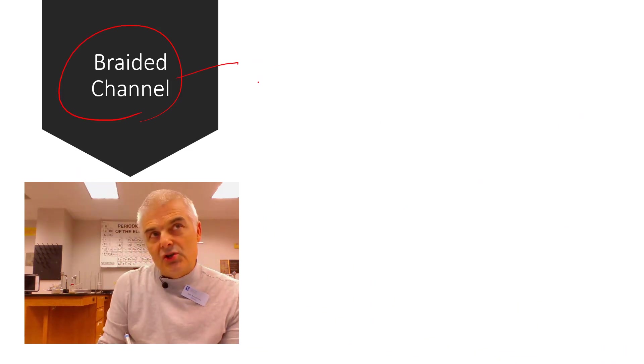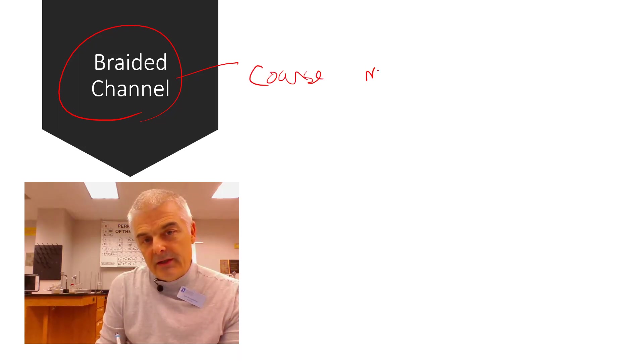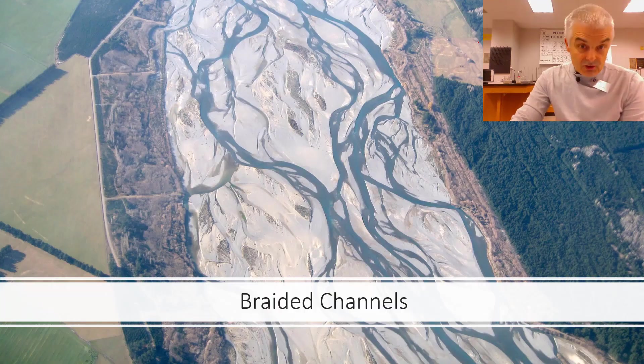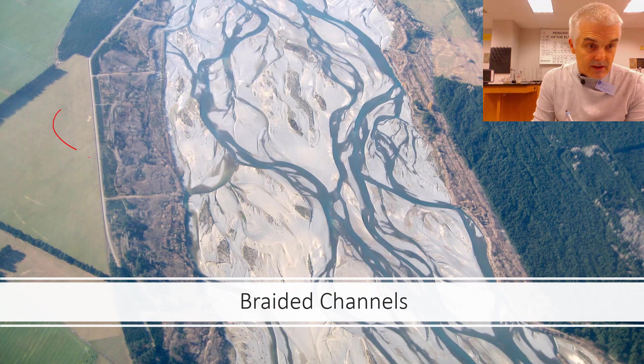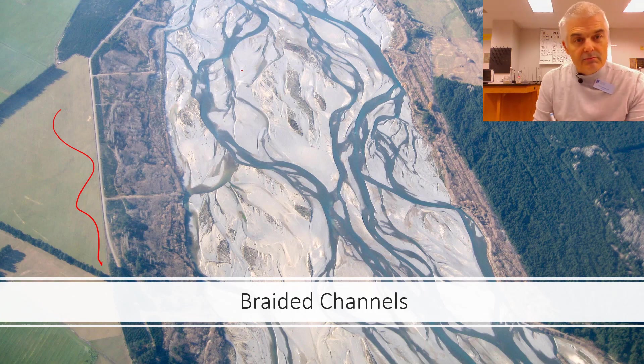But what's a braided channel? Now, we said it already. This is where, in a braided channel, you've got larger, more coarse material, right? But what does it look like? You see, a braided channel doesn't have that meandering whatever look. It is braided.